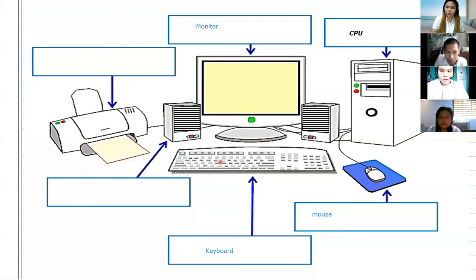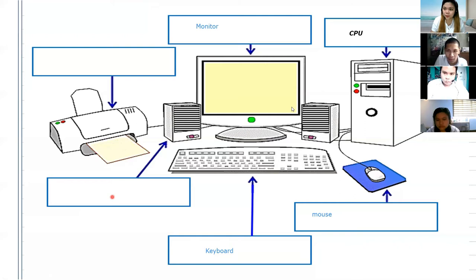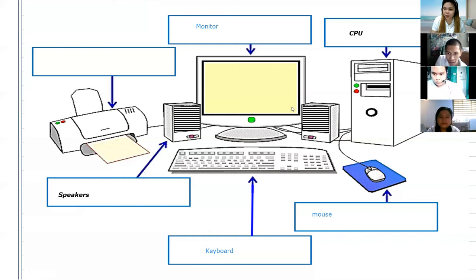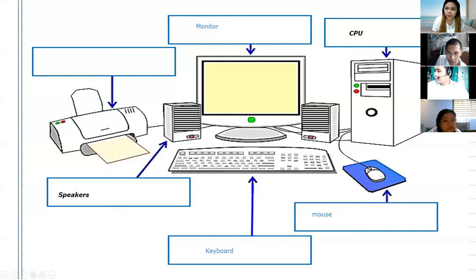Next, we have here what? Enzo, what's this? Can you please type its name here? Aika, what's that part? Speakers. And lastly, Aika, what part of the computer is this? Okay, it is the printer.